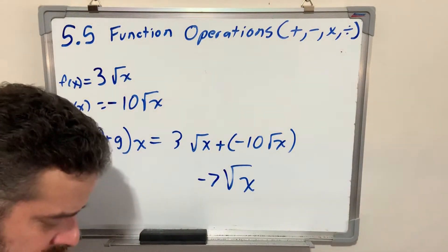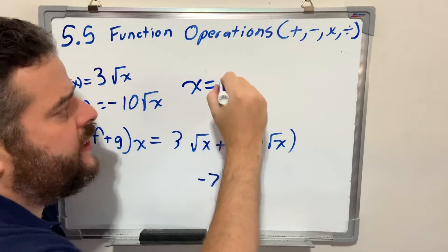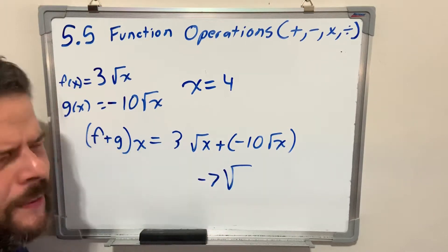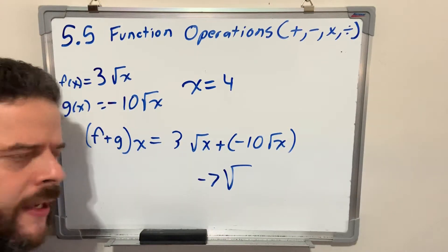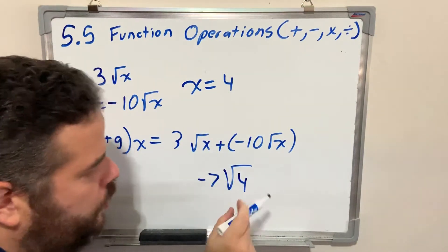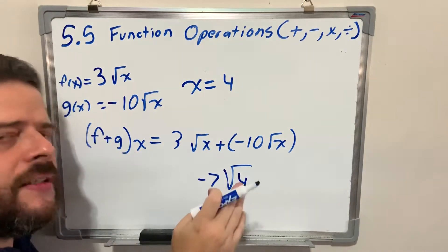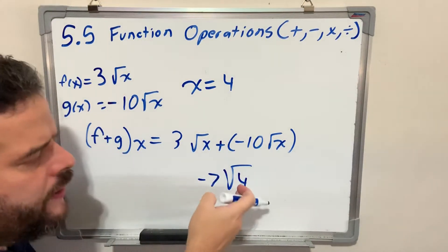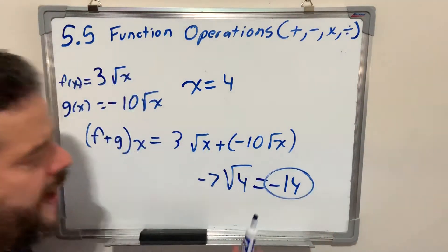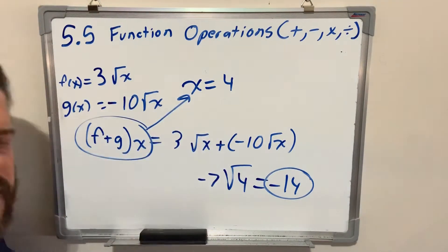I was also asked to evaluate this expression when x equals 4. I'm going to change at the end. Do it at the end once. One substitution versus 2, 3, 4, maybe 8 times. When I substitute my x at the end, square root of 4 is positive 2. Positive 2 times negative 7, negative 14. That is the evaluation when x equals 4.